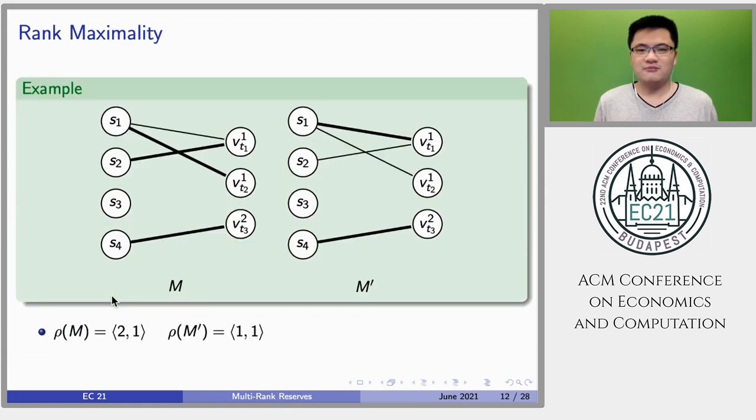Let's consider this example, where the bold edges represent matched edges in the matching. Recall that the superscripts of reserved seats denote their ranks. On the left side, matching M has a signature of 2-1, which is rank maximal for this instance. On the right side, matching M' has a signature of 1-1.